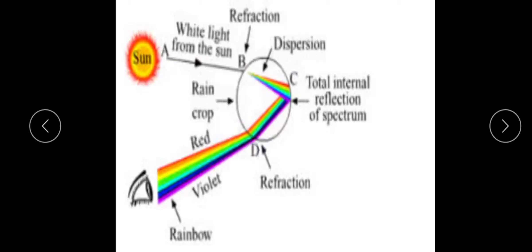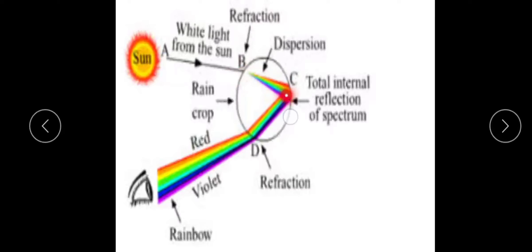The second phenomenon is dispersion - dispersion is the splitting of composite light into its constituent colors. White light is split up into its constituent colors. The third phenomenon is total internal reflection, which occurs when a ray of light travels back to the same medium and the angle of incidence is greater than the critical angle.